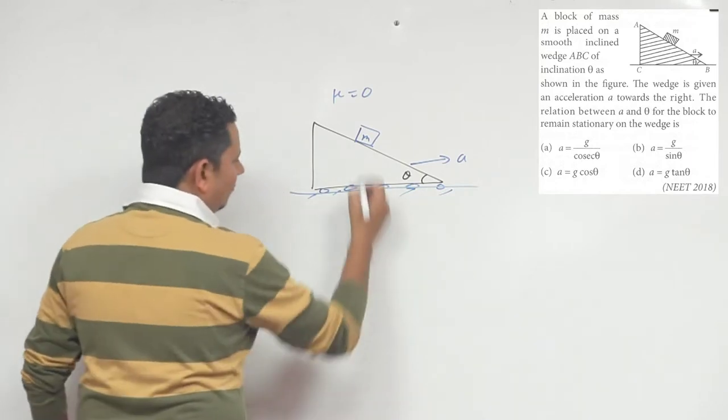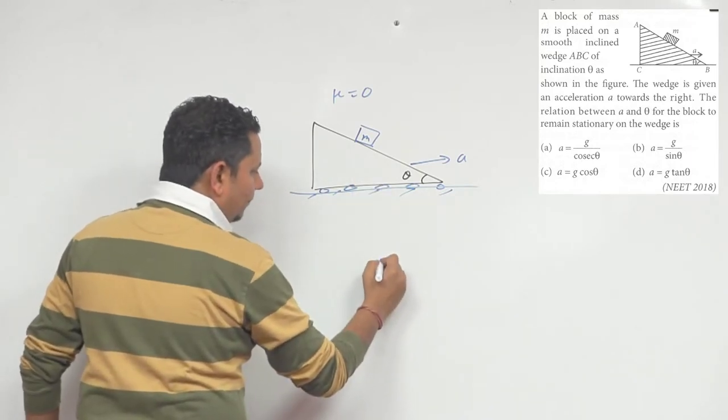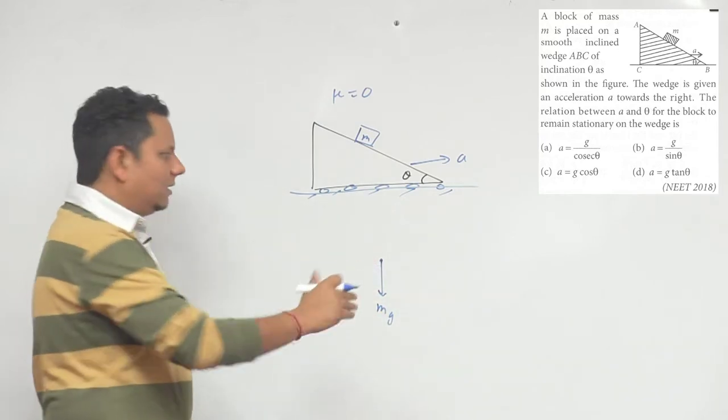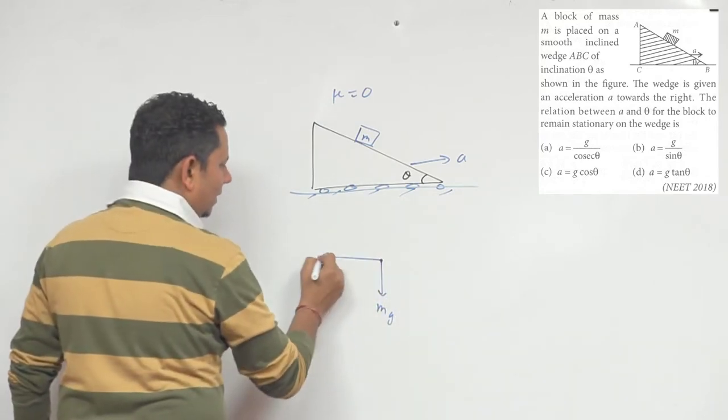A simple question is that if we will make a free body diagram of small M, then on M there is mg force downward. And because the acceleration is towards the right side, it is on the right side.